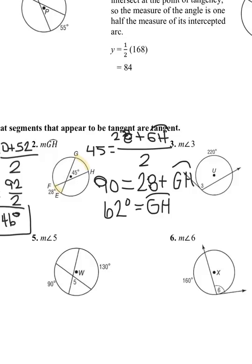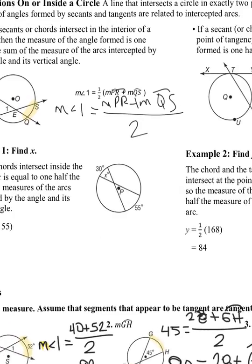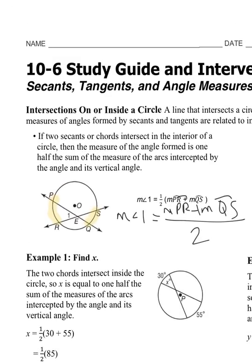To review the theorem we used for questions one and two: if two secants or chords intersect inside the circle, the measure of the angle formed is one half the sum of the arcs intercepted by the angle and its vertical angle. That's what we've done for questions one and two.